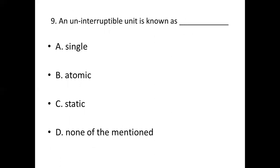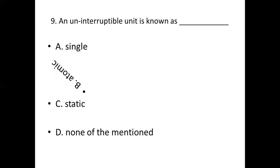Ninth bit. An unique interpretable unit is known as dash. Option A: Single. Option B: Atomic. Option C: Static. Option D: All of the mentioned. Answer: Option B, Atomic.